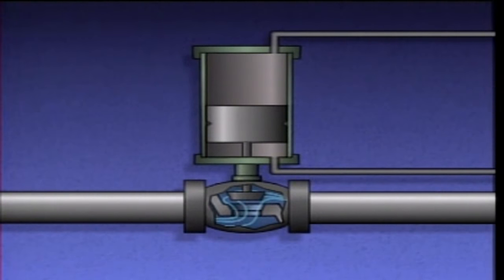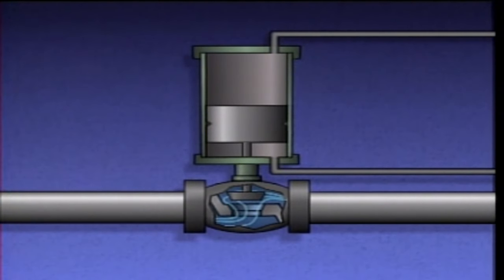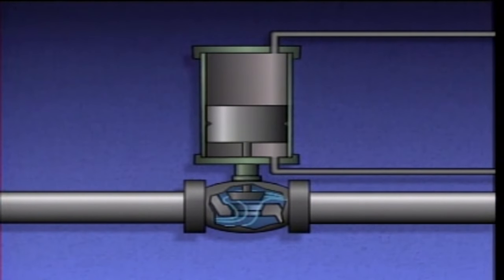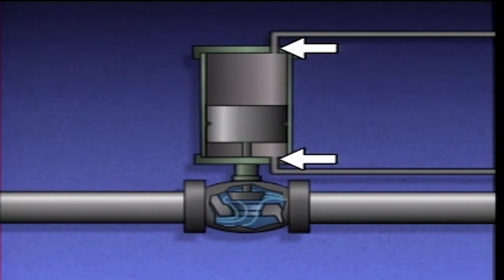There are also piston actuators that have air pressure supplied to both sides of the piston. This type is called double-acting. The parts of a double-acting piston actuator are similar to the single-acting type, but it does not have a spring, and there is an air supply port on each end of the cylinder.